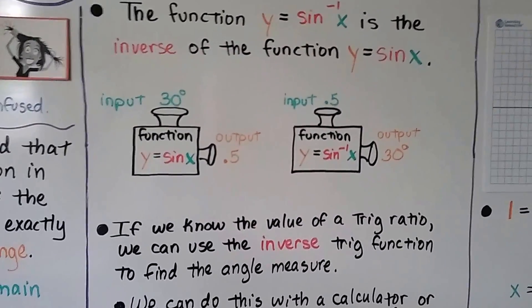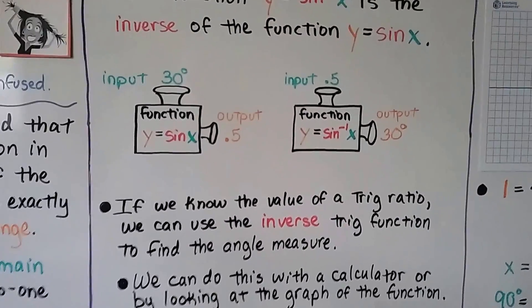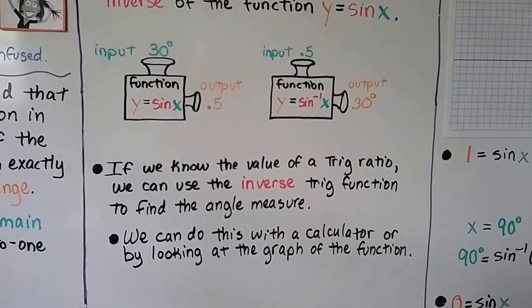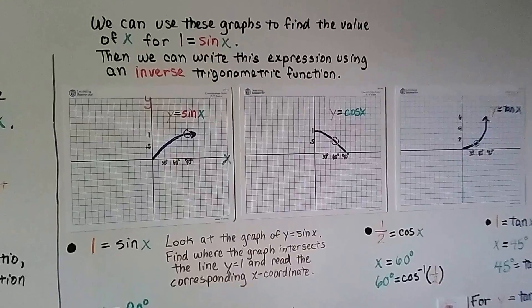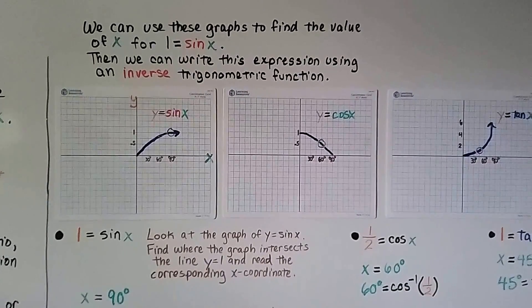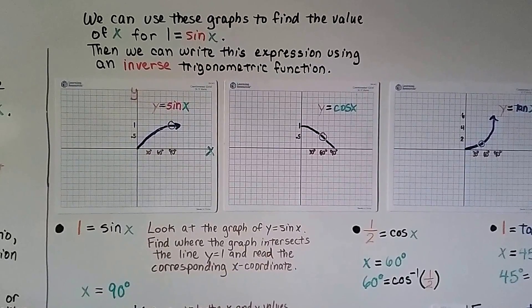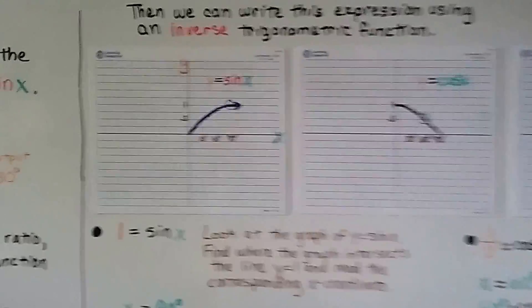And if we know the value of a trig ratio, we can use the inverse trig function to find the angle measure. We can do this with a calculator or by looking at the graph of the function. So, I've got three graphs here, and we can use these graphs to find the value of x for 1 equals sine of x. Then we can write this expression using an inverse trigonometric function. Let's take a closer look.